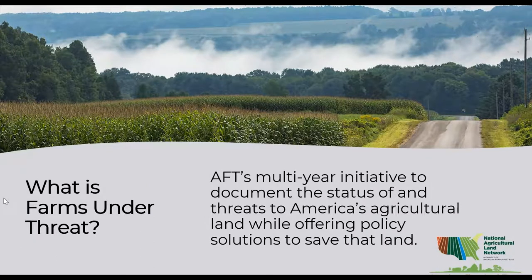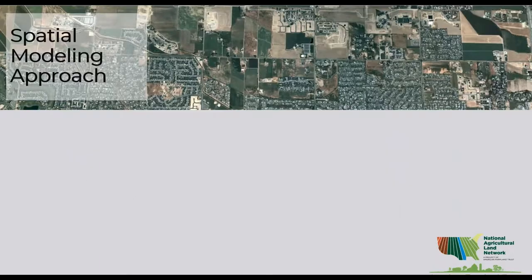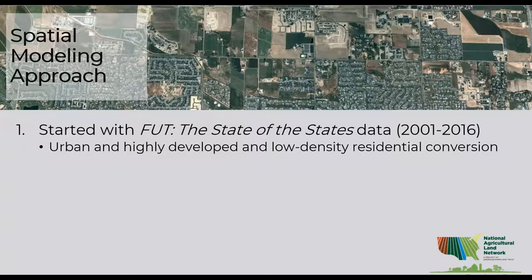Now we are going to dive into the methodology and the findings from the report. The first two Farms Under Threat reports — State of America's Farmland, released in 2018, and State of the States, released in 2020 — mapped past conversion of agricultural land, first from 1992 to 2012 and then from 2001 to 2016. In this report, we're looking forward, using past conversion data to model and predict future conversion of farm and ranch land out to 2040.